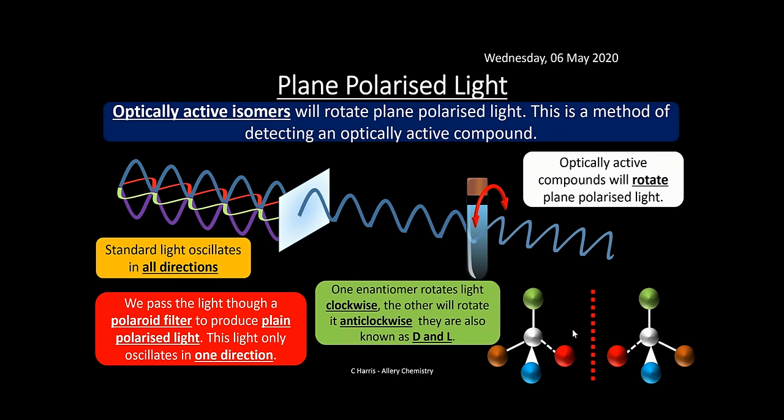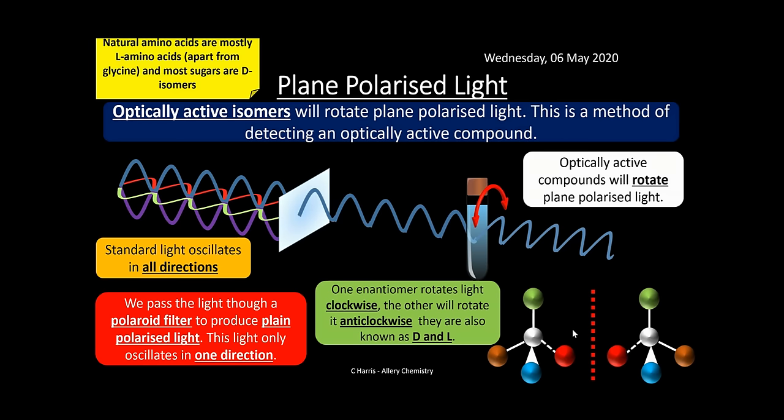One enantiomer will rotate plane-polarized light clockwise and the other will rotate it anticlockwise. This is also referred to as D and L notation — D and L simply tell us which direction the compound rotates plane-polarized light. Natural amino acids are mostly L amino acids, with the exception of glycine which is not optically active. Most sugars, such as those in your bloodstream, are D isomers.